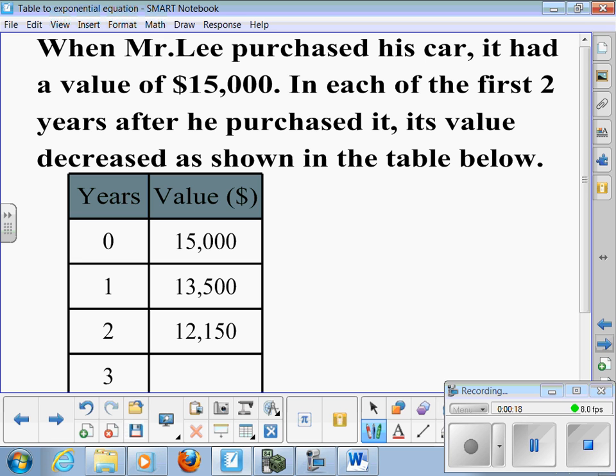The value decreased, getting smaller as shown in the table. To find out what percentage the decrease was, we would say $13,500 compared to $15,000.